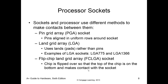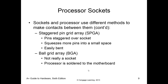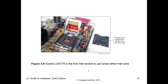Next is the processor socket type. Is it a pin grid array — meaning it has pins — or is it a land grid array (LGA), which uses no pins and instead uses pads? Those are the most common types. In a pin grid array example, the pins are actually on the socket rather than on the processor.